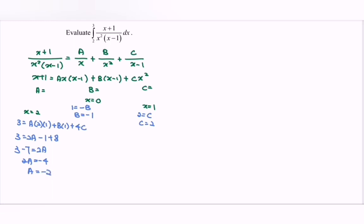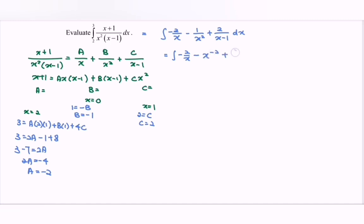Rewriting the situation, we now integrate: A over x gives -2 over x, then -1 over x squared, then +2 over (x - 1), with respect to x. Rewriting: integrate negative 2 over x, minus x to the power of negative 2, plus 2 over (x - 1), with respect to x, for the range 2 to 3.